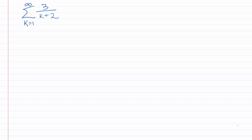In this video, we're going to practice using the comparison test to prove whether a series converges or diverges. Let's start with a series k equals 1 to infinity of 3 over k plus 2. That means that our a sub k is 3 over k plus 2.